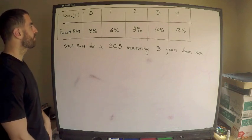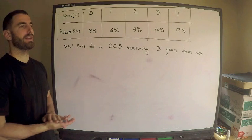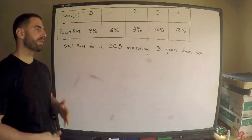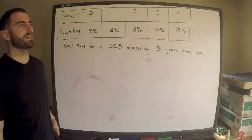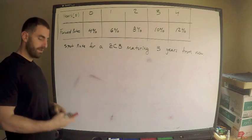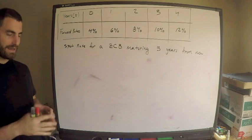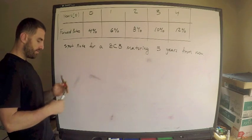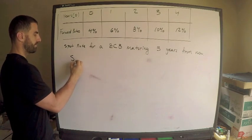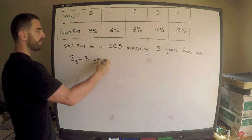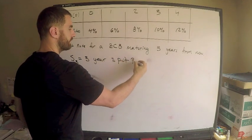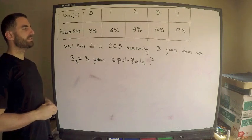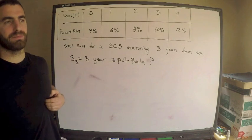Why am I doing this question? Because I have an extremely quick and efficient way of answering it. We're given these forward rates, and we're asked about the spot rate. There's a relationship between spot rates, forward rates, zero coupon bonds, and the price of zero coupon bonds. Here's a really nice relationship. First, let me write down what I'm looking for: s sub 3. I want to know what s sub 3 is — the three-year spot rate.